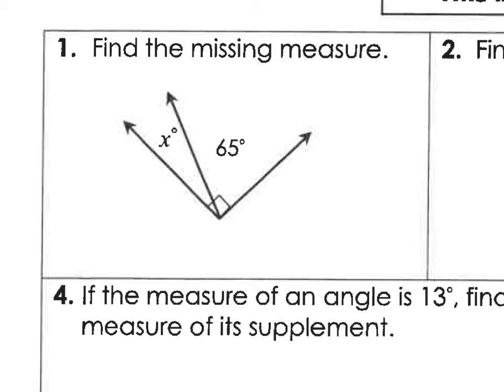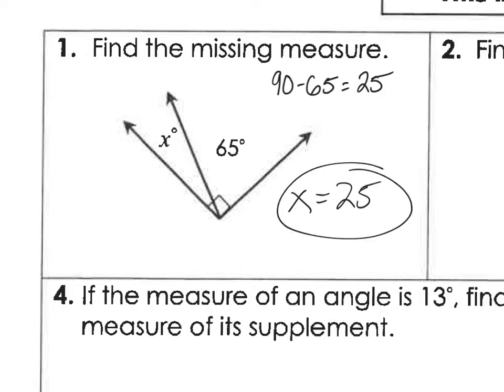So this right here — they're complementary, right, because they equal 90. So how would we find x? We would do 90 minus 65 equals 25, so x equals 25.